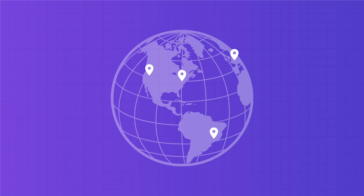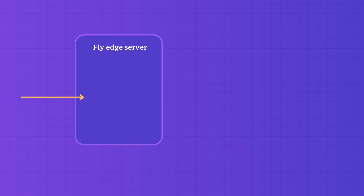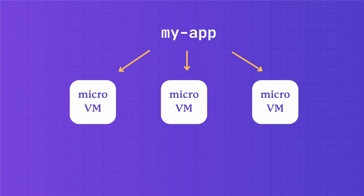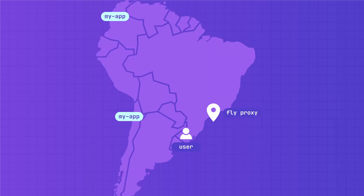How does all this actually work with Fly.io? When you launch an app, you'll typically be given a shared IP address to one of Fly's edge servers, and this is where you'll point your custom domain. These shared IPs are anycast IPs, and any request to your app will get routed to the nearest Fly edge server. If your domain shares the same IP as other Fly apps, how do requests get routed correctly? Well, once a request reaches an edge server, it goes through the Fly proxy, which knows that this domain belongs to this app.